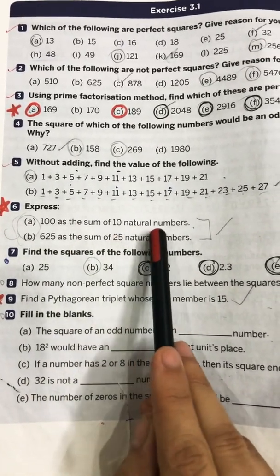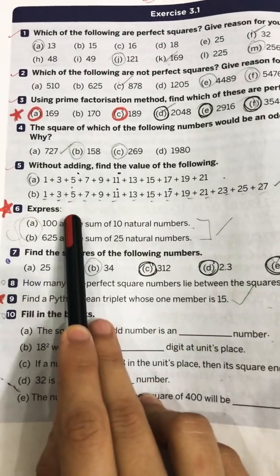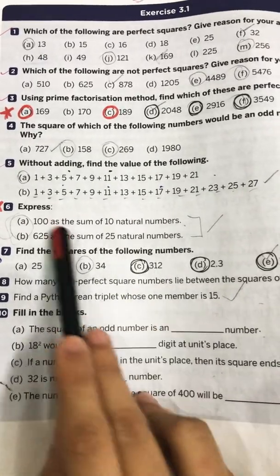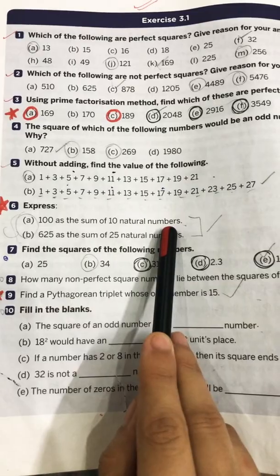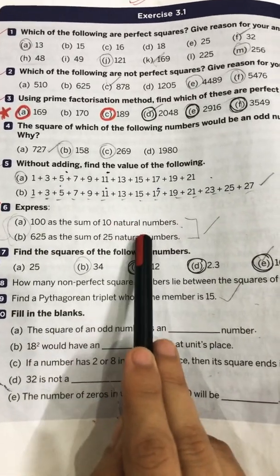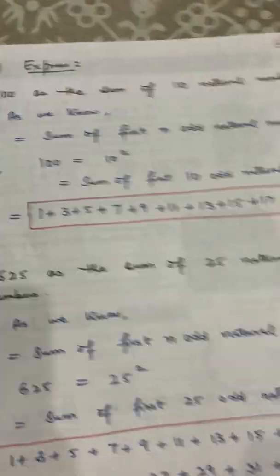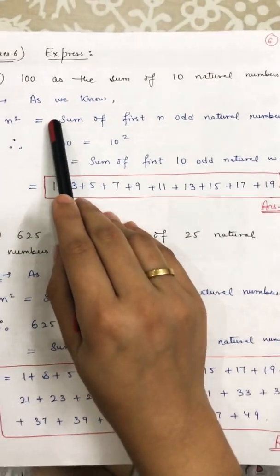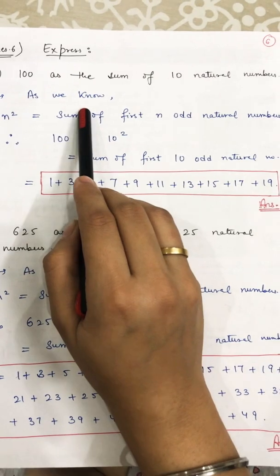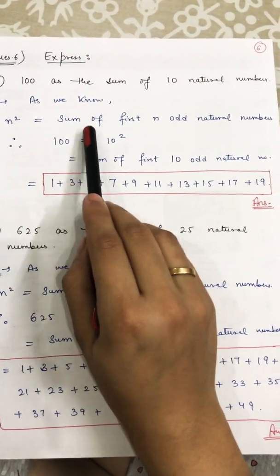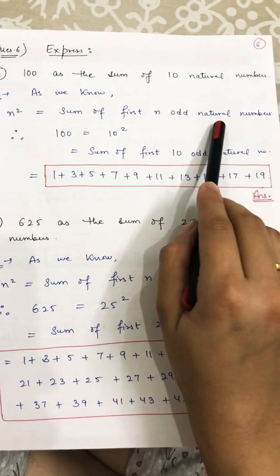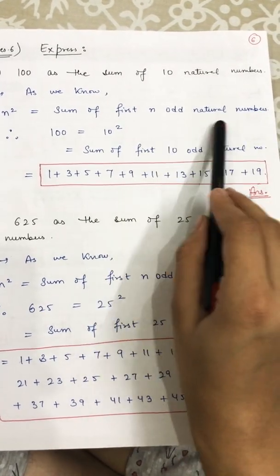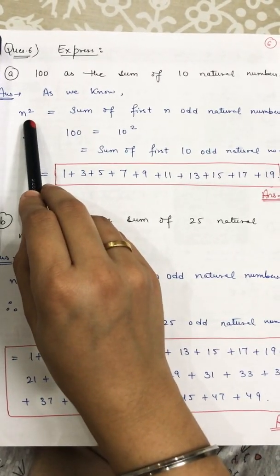Question 6 part a: express 100 as the sum of ten odd natural numbers. A statement is given to you and you have to write it down in the form of numbers. The solution uses the rule: as we know, n² is equal to the sum of the first n odd natural numbers — we discussed in the previous lecture that the sum of first n odd natural numbers is always equal to n².